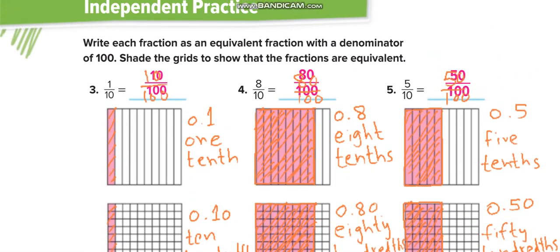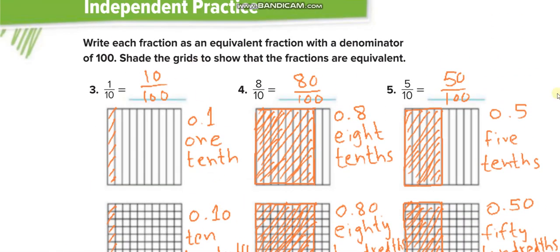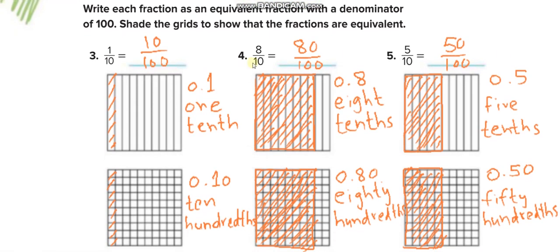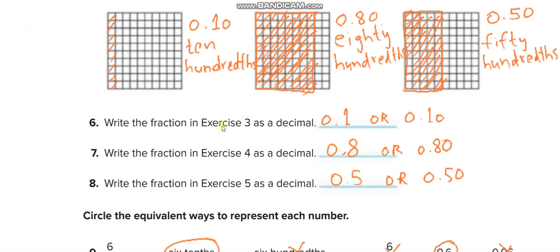Okay, similarly guys, here it is. You will solve all these questions in independent practice by yourself and then match your answers from this video. Write each fraction as an equivalent fraction with the denominator of 100. To change the denominator, you multiply by 10 up and 10 down. 10 over 100, 0.1. The decimal for this is 0.10. The word form: 1 tenth, 10 hundredths.